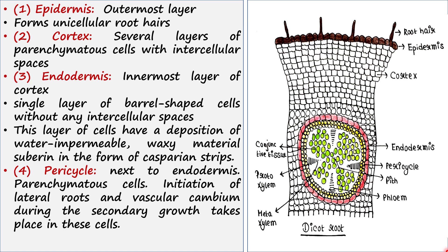When we talk about dicot root anatomy, we will find some layers. The first and outermost layer is called the epidermis. Some root hairs are found here — each cell of the epidermis can form a root hair, but not all cells will. Each root hair represents a single cell, so it is a unicellular root hair.